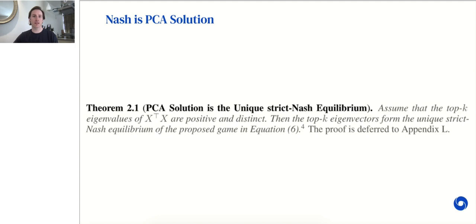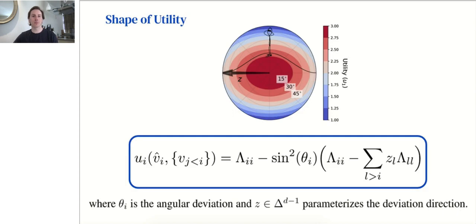This game satisfies the desired property that PCA is the unique Nash equilibrium. That is to say, the game we have constructed is appropriately designed to capture the PCA problem. Despite the utility function's somewhat abstruse form, its shape is actually quite simple. Each player's utility function turns out to be a sinusoid in the angular deviation from the true eigenvector direction.